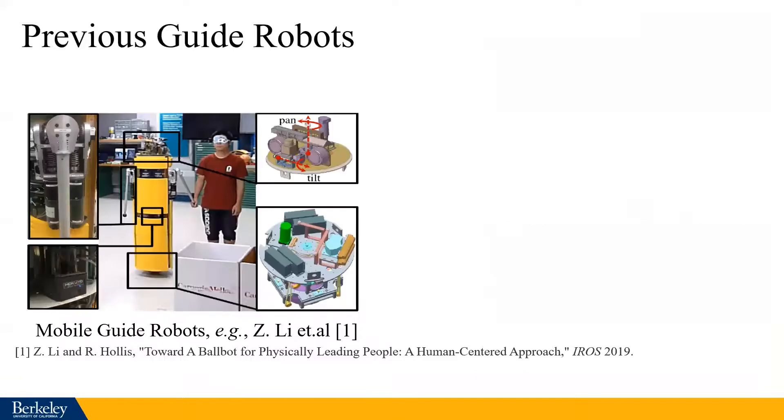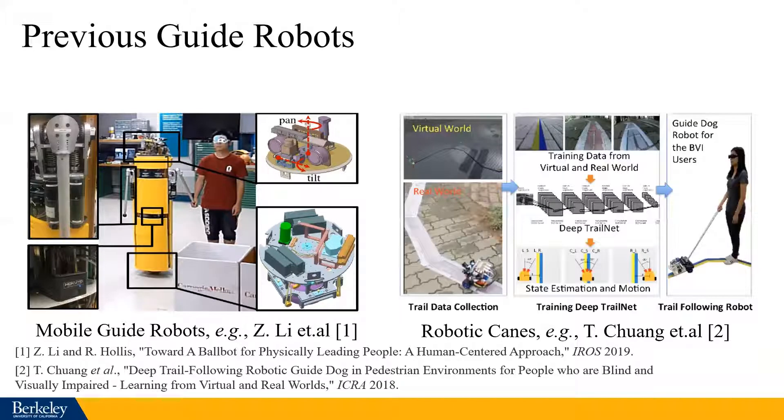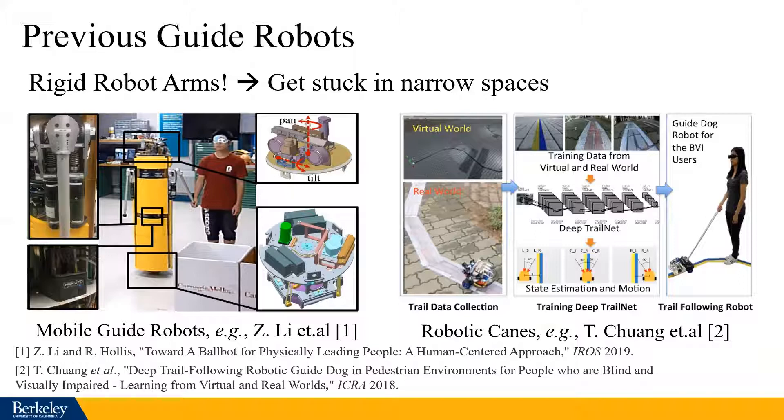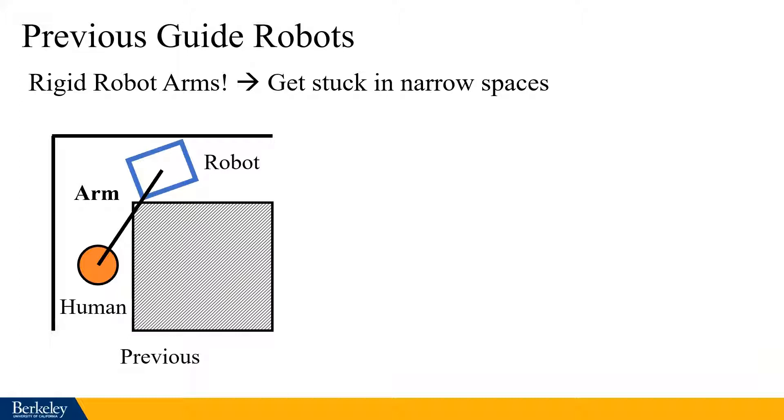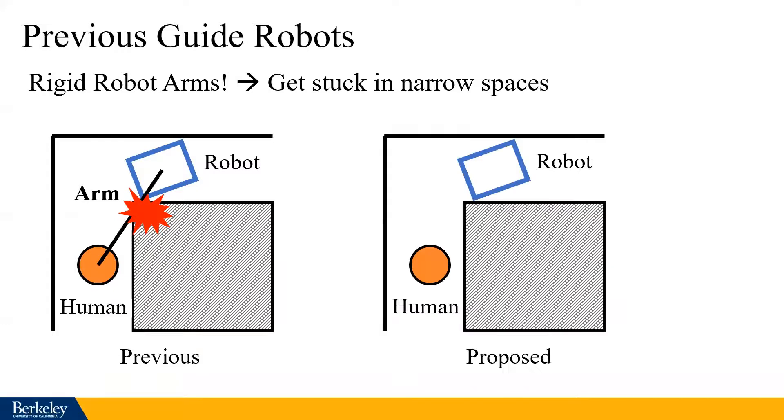There are already previous endeavors to develop robotic guiding systems, and there are two major types. First one is using a mobile robot to provide the human with physical assistance and active guidance. Another one is to use robotic cane to help the visually impaired person to detect the surroundings and to navigate. However, most of the previous work used rigid robot arm to lead a human, and this has a drawback. The system can get stuck in narrow spaces. As you may notice, most of the previous work only showed the ability to lead a person in open spaces. Therefore, in this paper, we want to address this problem by introducing a leash.